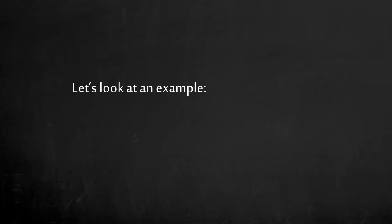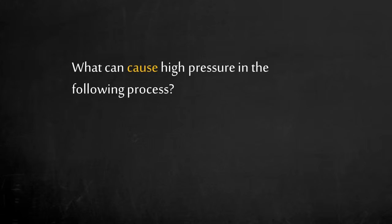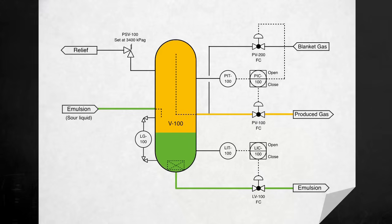Let's look at an example in the oil and gas industry. What can cause high pressure in the following process? Here you have a pressure vessel with product coming in as emulsion. This vessel has a pressure control loop and a level control loop. This vessel has a maximum allowable working pressure slightly above the pressure safety valve set point of 3400 kPaG. Let's start off with the high pressure deviation from normal operation. Can you think of a cause?